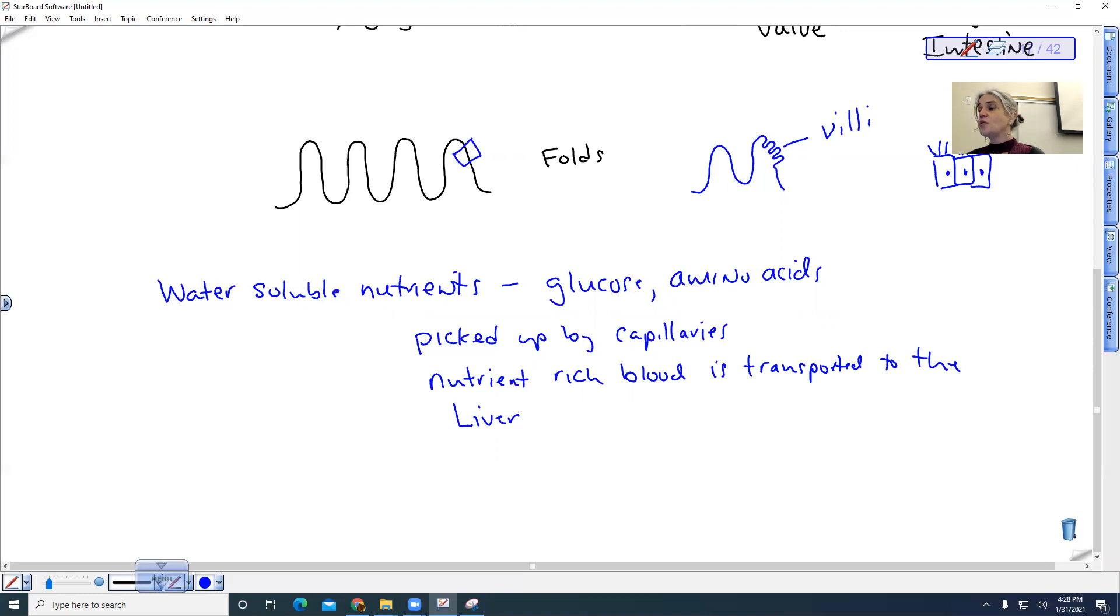What if you absorbed so much glucose that if it went to your brain, you would go into a coma? So the liver is what actually helps to modify the nutrients that we absorb. And so we'll talk more about that when we get to the function of the liver, but that's a function of the liver.